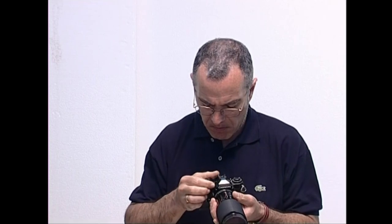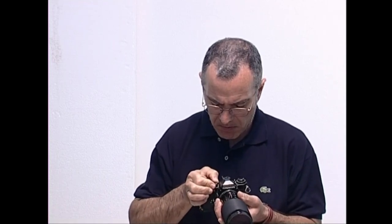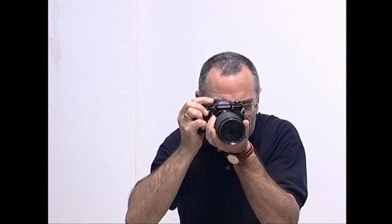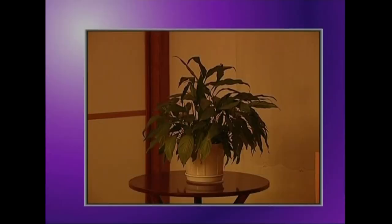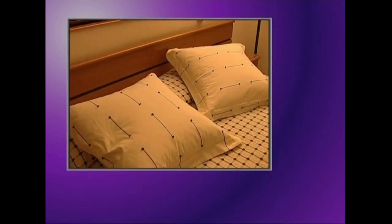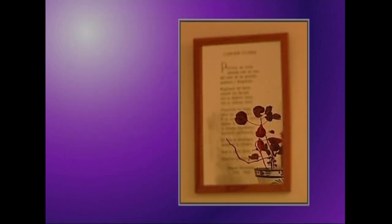Zer gertatuko litzateke kampoaldekoa barrualdean eta barrualdekoa kampoaldean erabiliko bagenitu? Eguzkitan, ibili behar den pelikula, tungsteno argiez argiztatutako barrualdean erabiltzen dugunean, kolore laranjiako tonuak lortuko ditugu, edo beste modu batera esanda, tonu beroak.